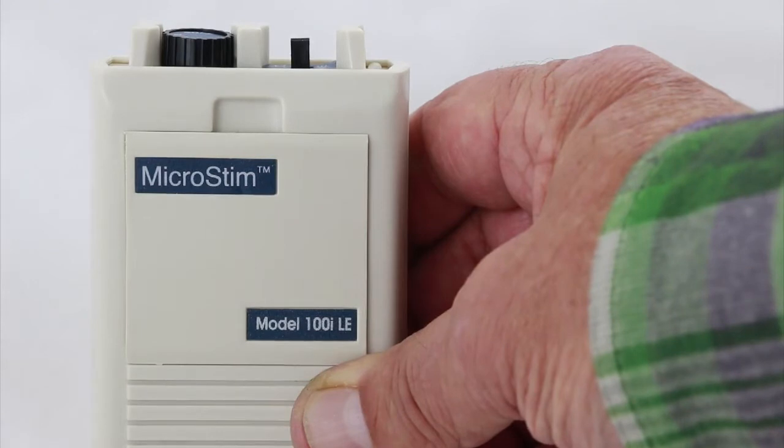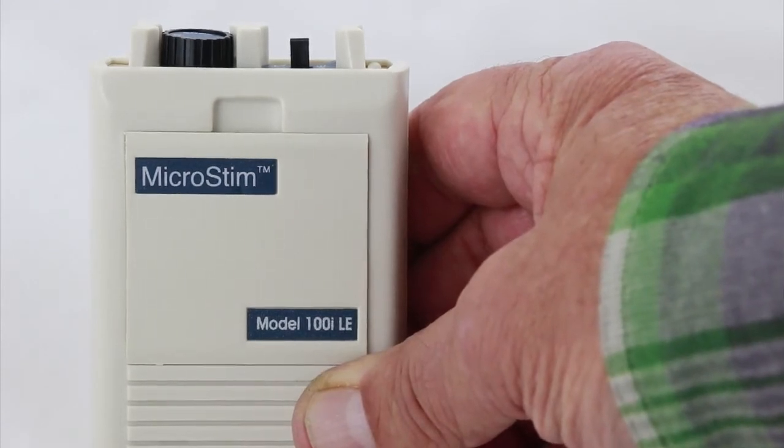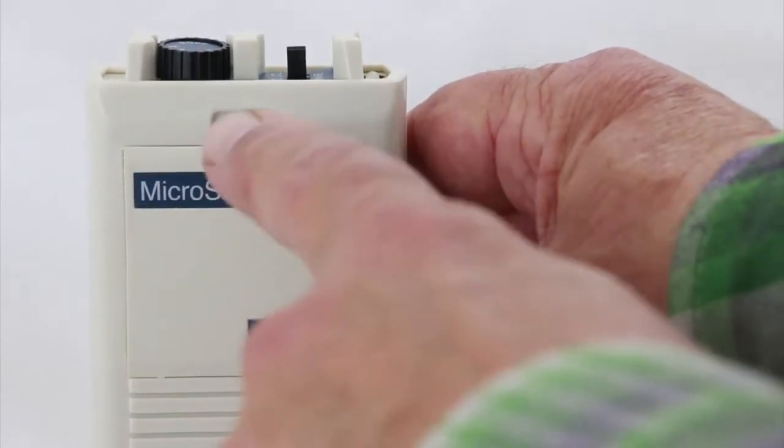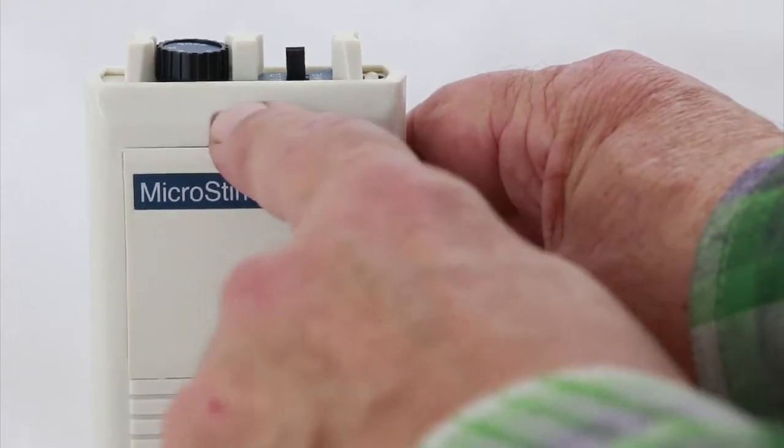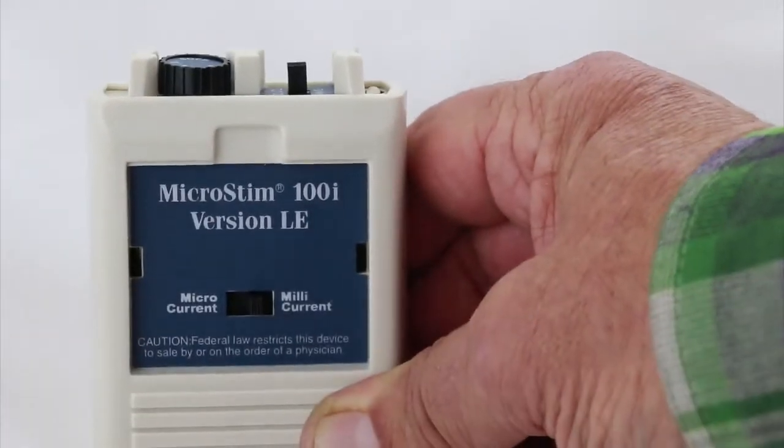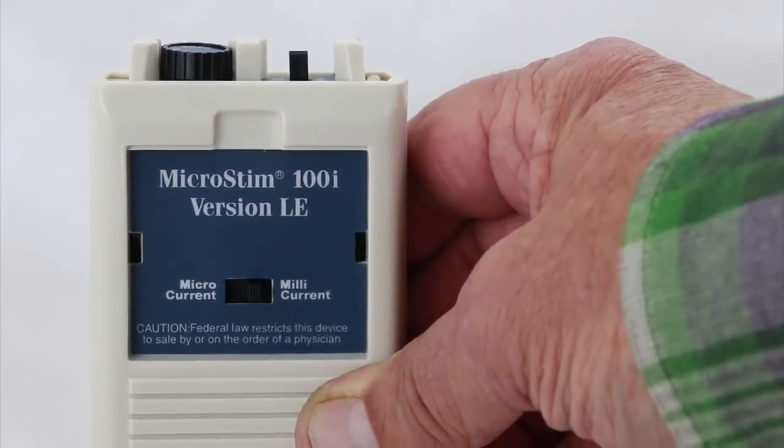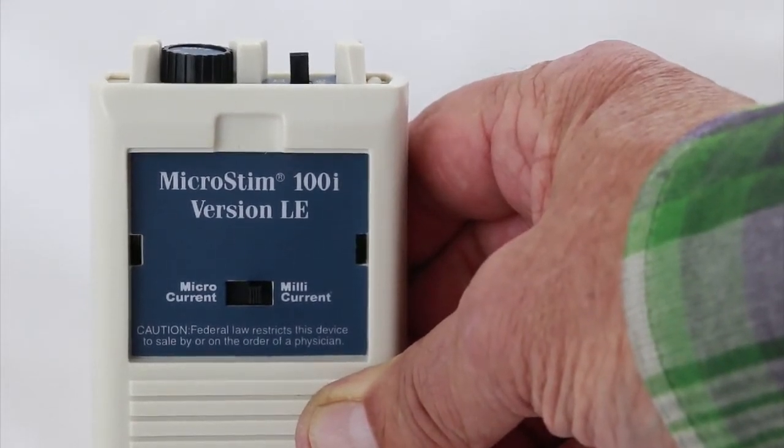We are going to go over the basic settings for the MicroStim 100i LE. The first thing you'll notice is that there's a little door here. If you hook your finger right here and pull the door off, it will reveal a single switch underneath.